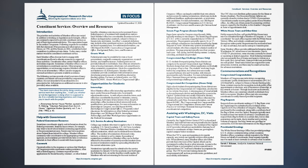Each member office chooses how to engage with constituents and how to allocate resources in support of these activities. Constituents often contact member offices and initiate requests. Sometimes a member office is one of several places a constituent can turn. Other programs, opportunities, or services may require a member office to serve as an intermediary. Offices can also engage in outreach activities to promote available assistance. The following sections provide a brief overview of many common constituent services provided by congressional offices. It is not intended to be an exhaustive or prescriptive list.